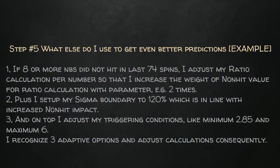If you are measuring 74 spins and you see that 10 numbers didn't hit, you can be pretty sure that very soon those 10 numbers will come — at least some of them. It makes sense to put a certain weight on non-hit and increase its importance in your ratio calculation because those 10 numbers are going to hit very soon. Observe this by yourself and you will see — maybe you will even create some other system based on this insight.